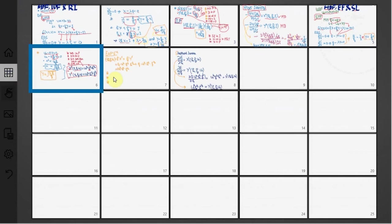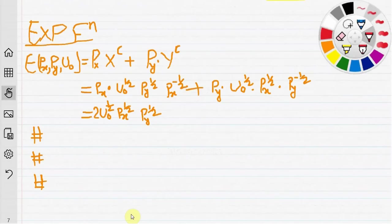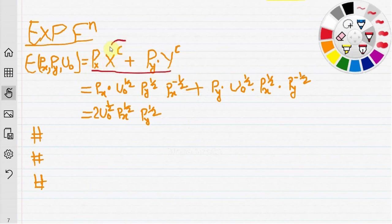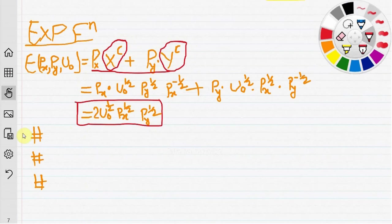Now we move to the expenditure function. If we substitute the values of x and y in the form of compensated demand curves just derived into the budget expression px·x + py·y, we get the expenditure function. We put the value of the compensated demand function for both x and y and obtain the expenditure function.